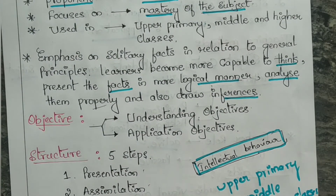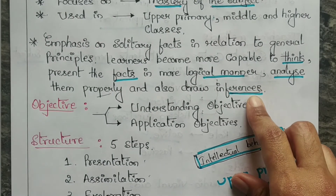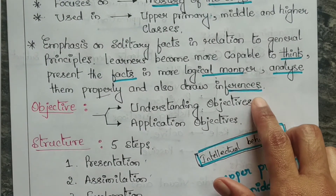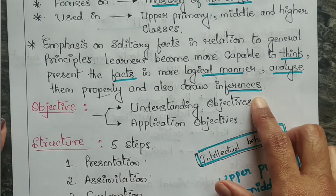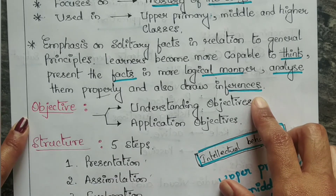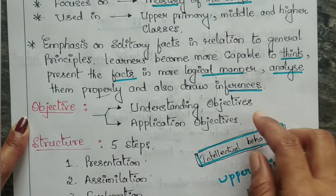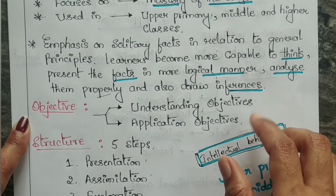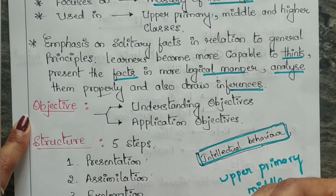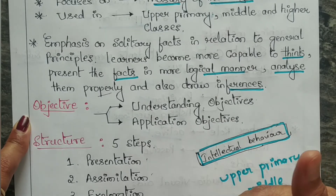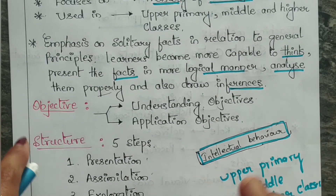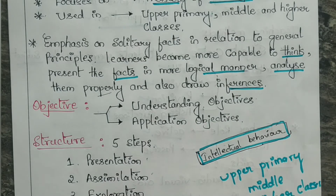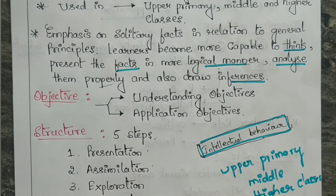Coming to objectives, there are two objectives: understanding objective and application objective. The understanding objective is about understanding the instructional messages — how students will understand by interpretation, by exemplifying, by classifying, by comparing, and by inferring. When you give interpretations and come with exemplifying and classifying, students will also start to do all these things.